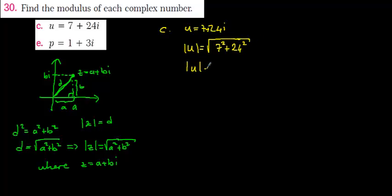it should be equal to square root of seven squared is equal to forty nine, twenty four squared is equal to five hundred seventy six. It must be module of u is equal to the root of six hundred